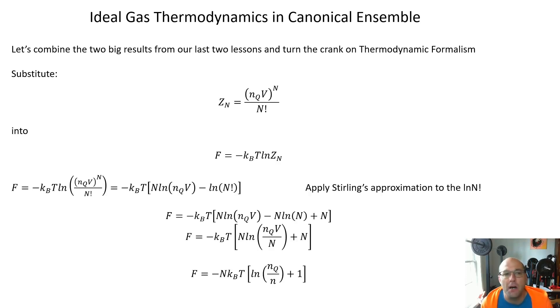So we want to combine the two big results from the last two mini lessons. Two times ago we derived that the partition function, the composite partition function for the ideal gas was this expression. So this is the quantum concentration nQ. It depends on temperature, volume, and the particle number N. We want to substitute that into this expression from the most recent mini lesson: F equals minus kBT ln ZN. So let's just sub in.